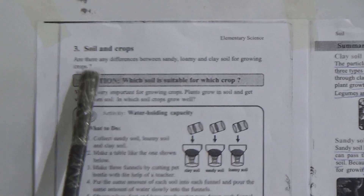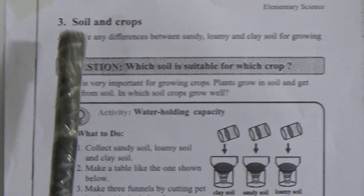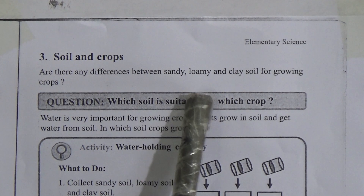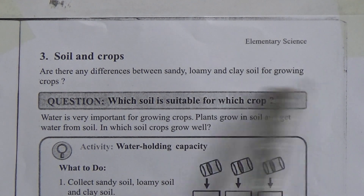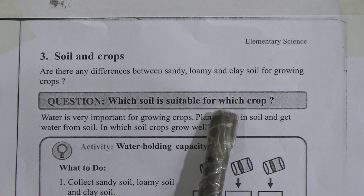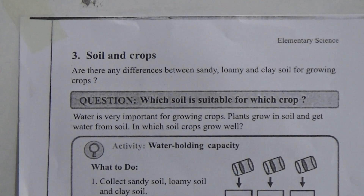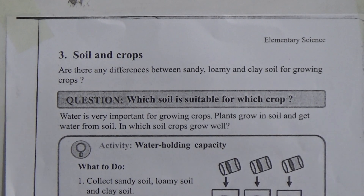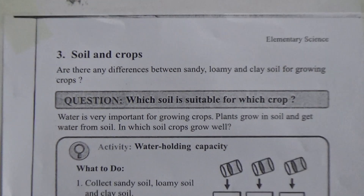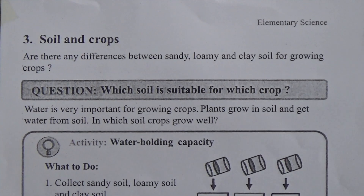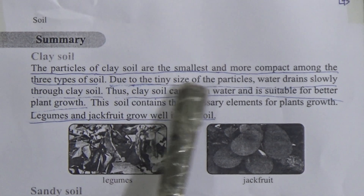Soil and crops — are there any differences between sandy, loamy, and clay soil for growing crops? My dear students, after discussing this page we can easily find out the differences between sandy, loamy, and clay soil, and which soil is suitable for which crop. Now let's start with clay soil. The particles of clay soil are the smallest and most compact among the three types of soil.